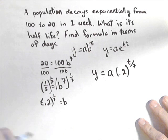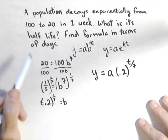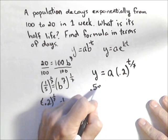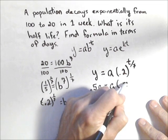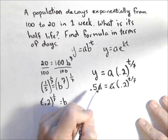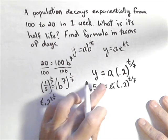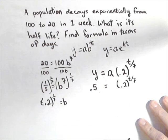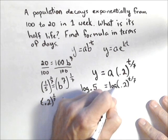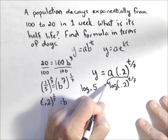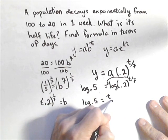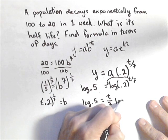Now we need to find the half-life. We don't need to know the initial, or we could start with 100 — we're going to get the same thing. We want to know when the initial A gets down to half of that, so we want to know when 0.5A equals A times 0.2 to the T over seven. We can cancel the A's out by dividing both sides by A, so we get 0.5 equals 0.2 to the T over seven. Here's where we employ logs — we take the log of both sides so we can pull the exponent out front. So we have log of 0.5 equals T over seven times log of 0.2.